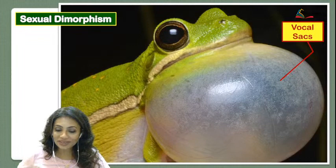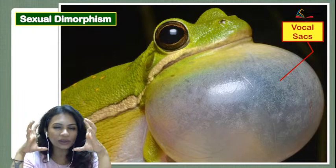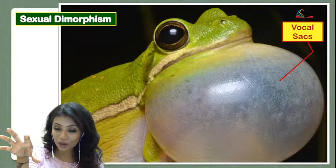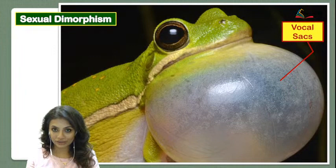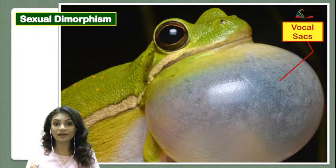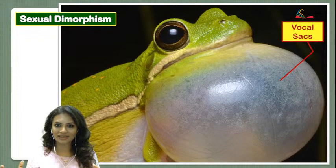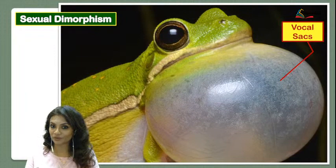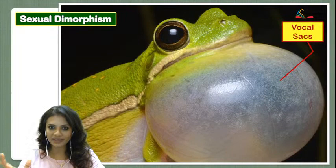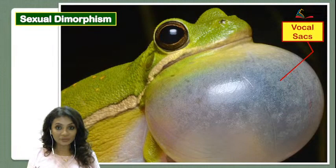The vocal sacs are the reason you hear that loud sound from frogs. Those sounds are made from the vocal sacs in order to attract the female frog. In fact, the male frog that makes the loudest sound for the maximum duration is the one to which the female is most attracted for mating and reproduction. So vocal sacs are essentially for making noise to attract the opposite gender.